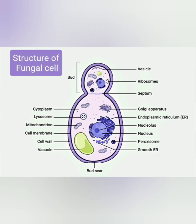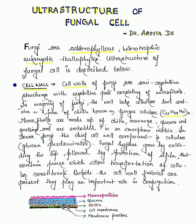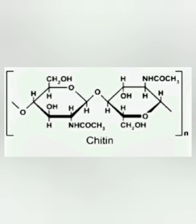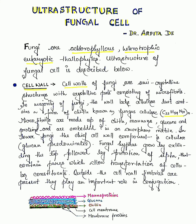Starting with the cell wall: the cell walls of fungi are semi-crystalline structures with crystalline parts consisting of microfibrils. In the majority of fungi, the wall lacks cellulose but contains a form of chitin known as fungal cellulose or fungus cellulose, which has a chemical formula of C22H54N21n. The microfibrils are made up of chitin.